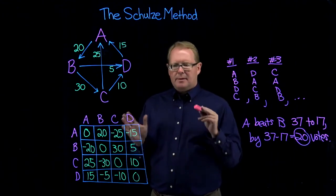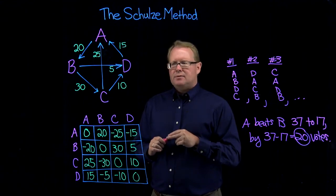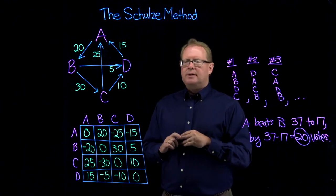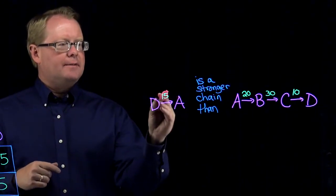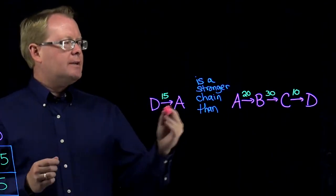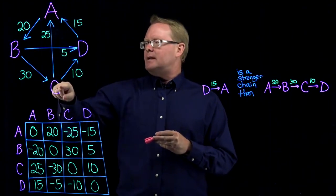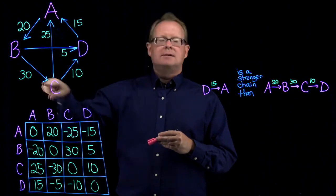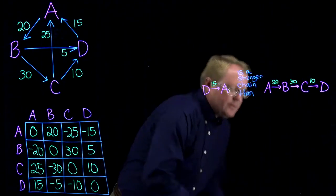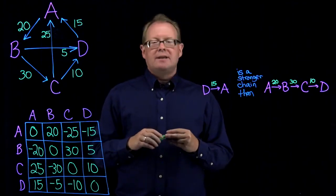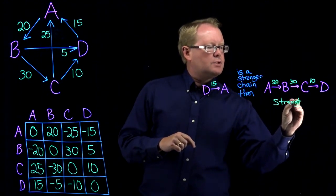The Schulze method also says that D wins, but for a more complicated reason. If you're not a mathematician this may be confusing; if you are, you're about to see some beautiful analysis. The Schulze method works by looking at chains of victories. D beats A by 15 votes — that's a chain of length 1 from D to A. A more interesting chain goes from A to D: A beats B, and B beats C, and C beats D, giving a chain from A to D. A beats B by 20, B beats C by 30, and C beats D by 10. The strength of a chain is the strength of its weakest link, so the smallest number here is 10 — the strength of this chain is 10.